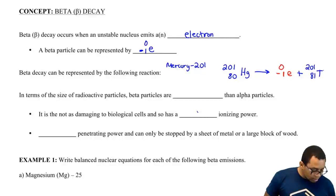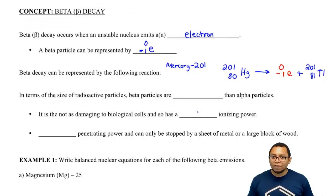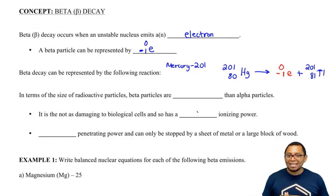So here would be TL. So this would be an example of a beta decay or a beta emission.